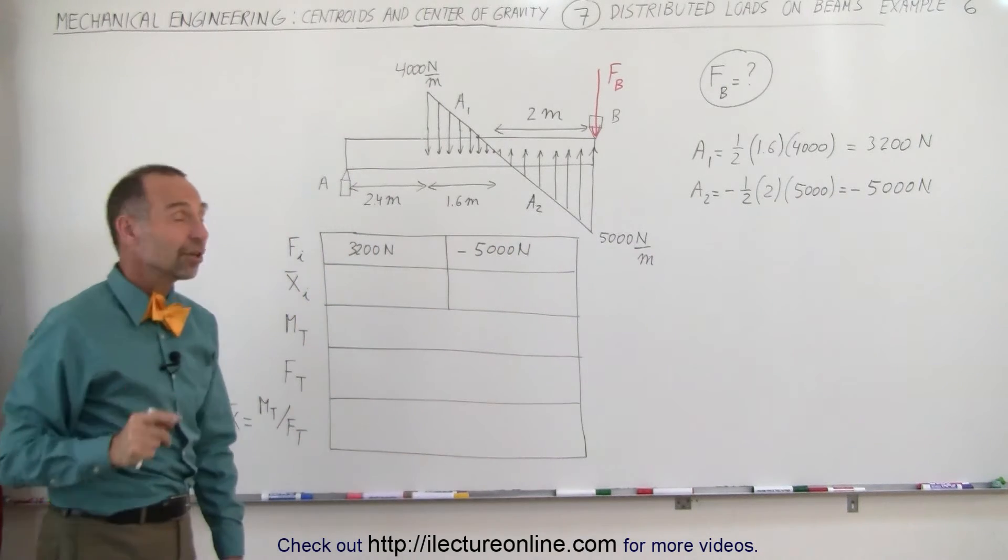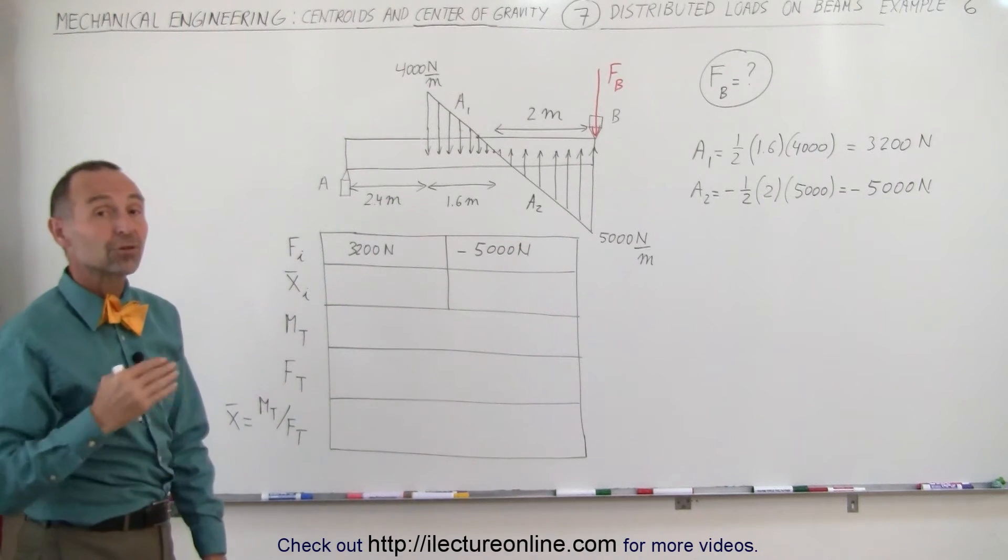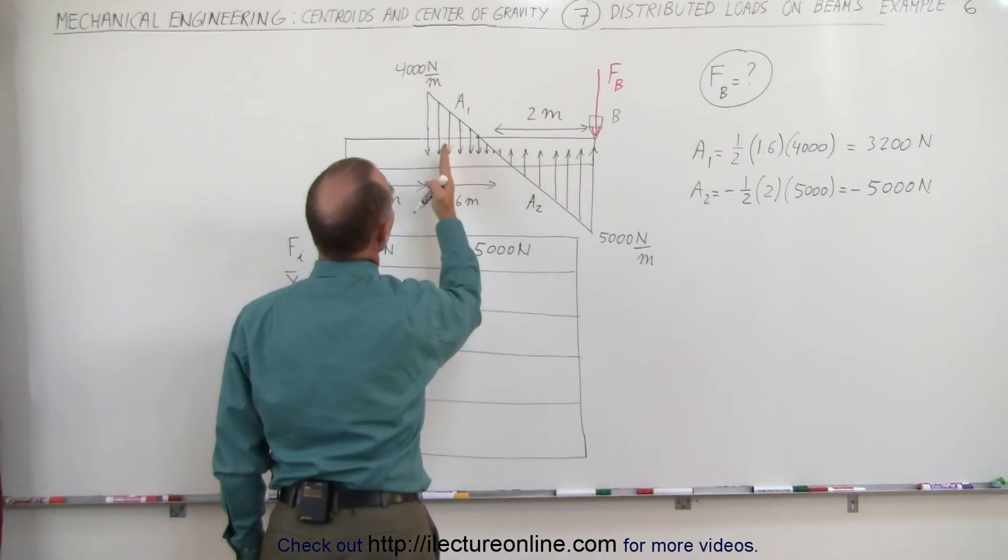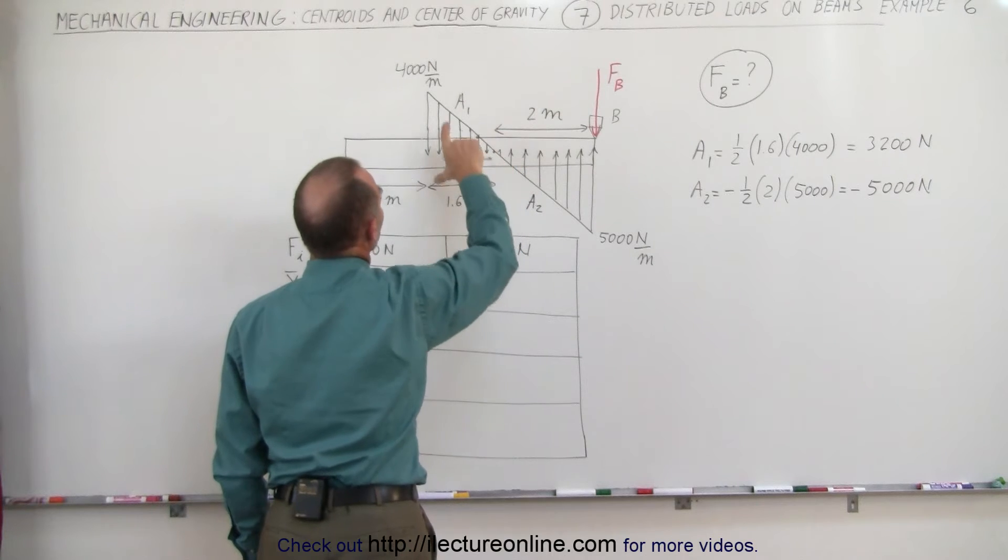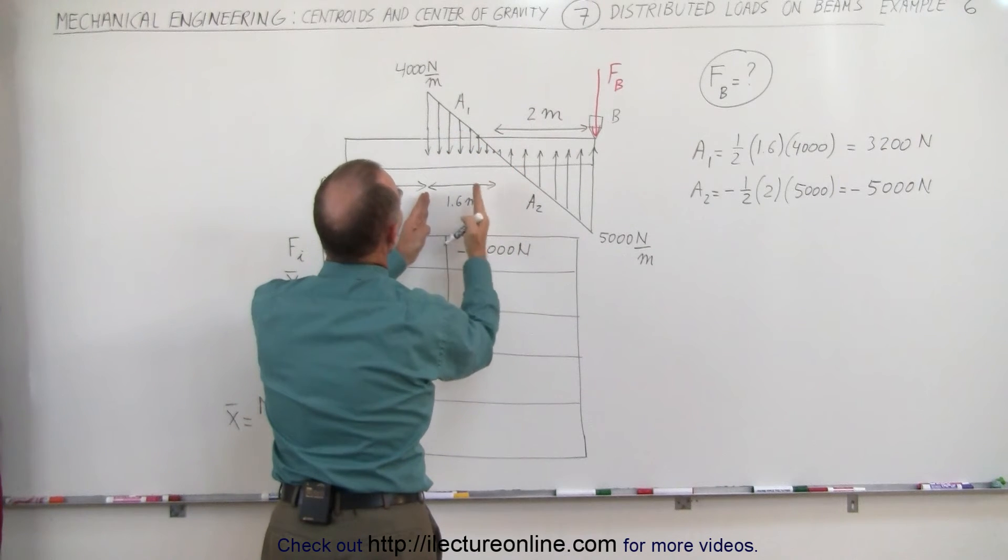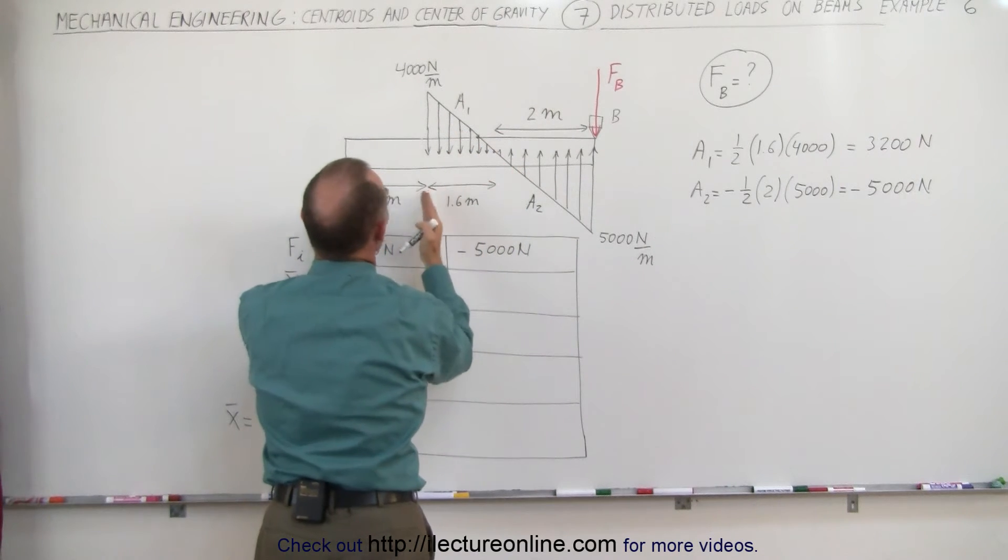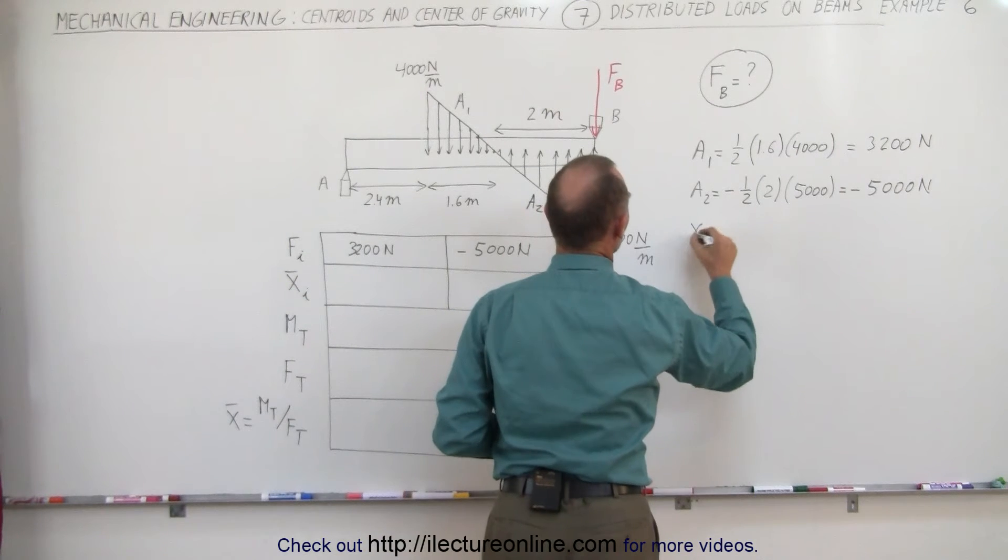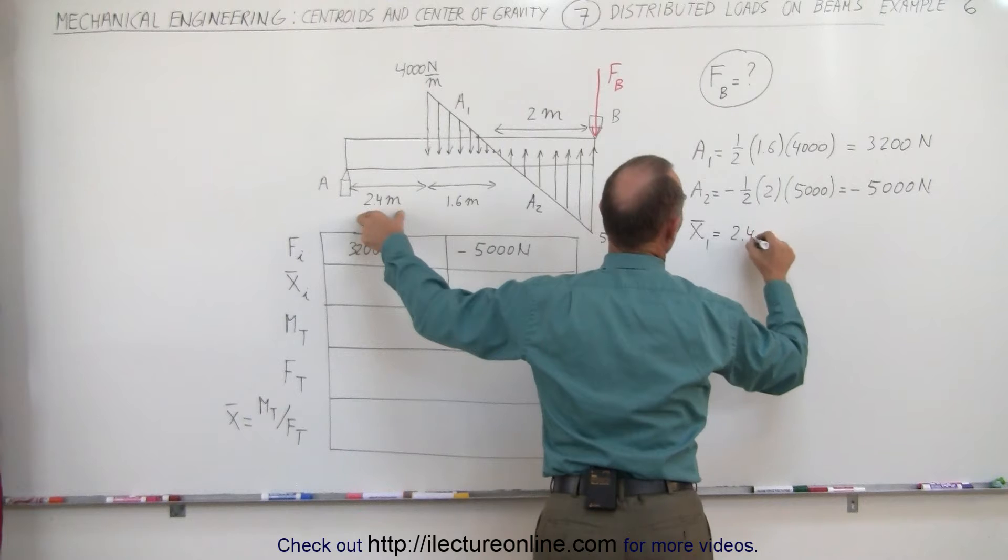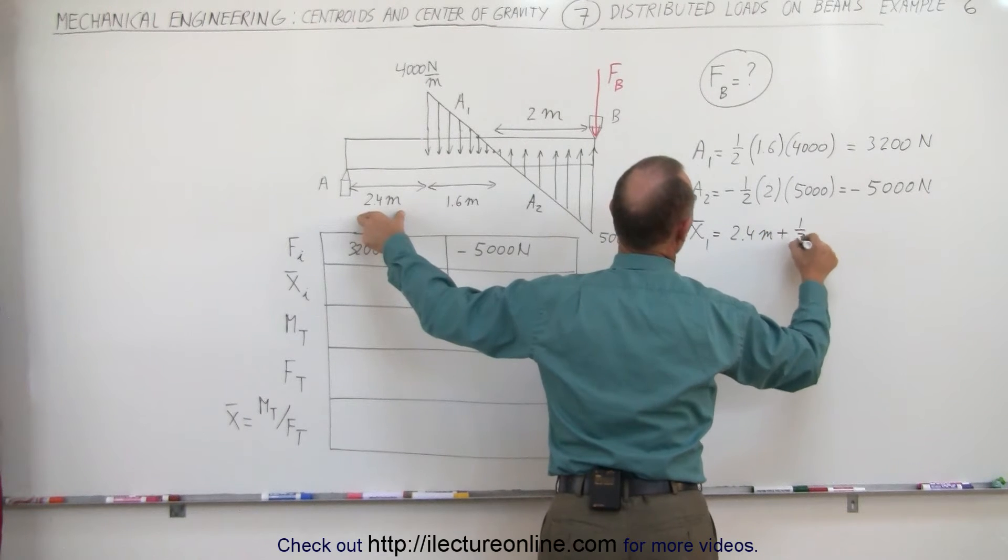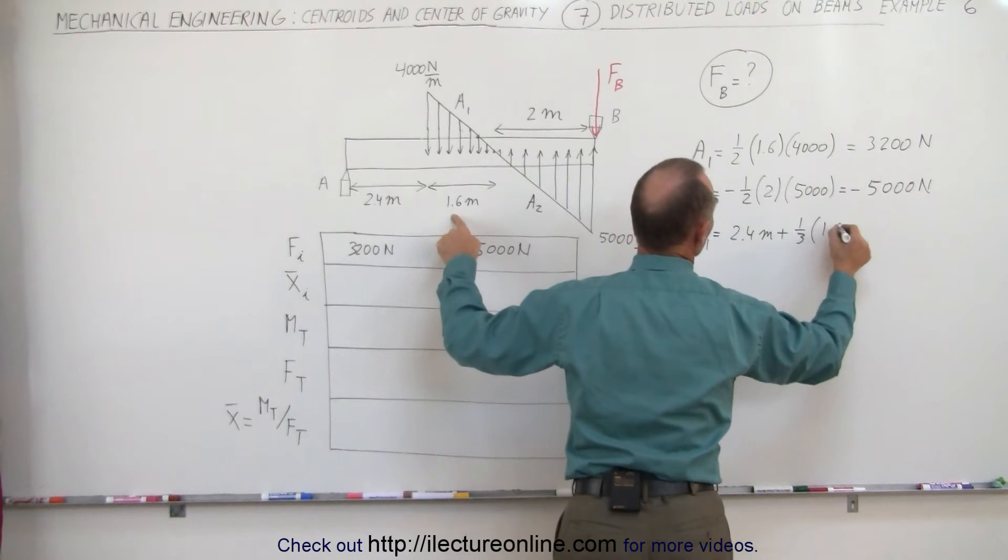Now for the centroid. Remember with a triangular load distribution, the centroid is one-third the distance from the tallest portion down to the point. So it's one-third the distance of 1.6 meters added to 2.4 meters. x sub 1 is equal to 2.4 meters plus one-third times 1.6 meters.